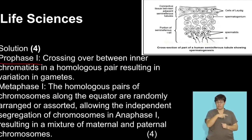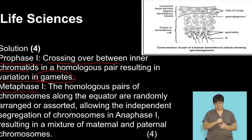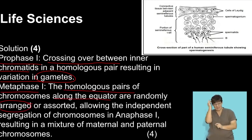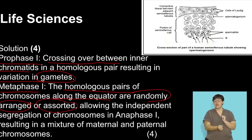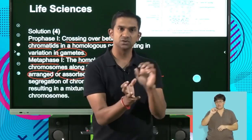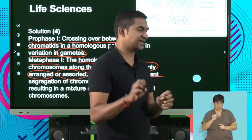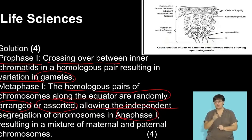To wrap up this segment: in prophase one, crossing over produces variation in the chromatids, and that variation is present in the gametes. In metaphase one, homologous pairs meet along the equator and are randomly arranged — random assortment occurs when chromosomes are moved apart during anaphase one. Collectively, we need to link processes like meiosis to spermatogenesis and oogenesis. That's a wrap for this question — let's move on to more revision in the next segment.